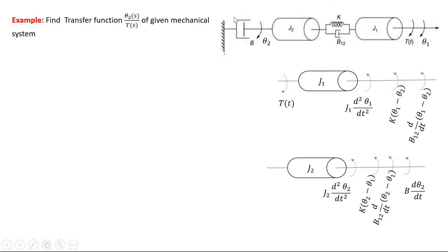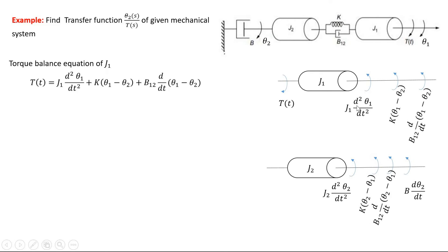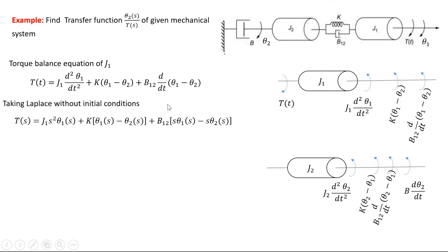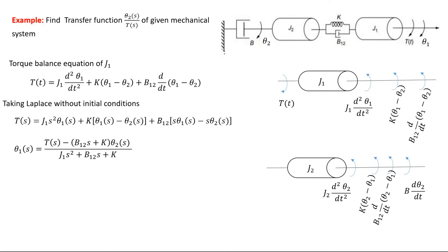Writing the torque balance equation for J1: T(t) = J1·d²θ1/dt² + K·(theta1 − theta2) + B12·d(theta1 − theta2)/dt. Taking the Laplace transform, T(S) = J1·S²·θ1(S) + K·(θ1(S) − θ2(S)) + B12·S·(θ1(S) − θ2(S)). This is designated as equation 1, from which we can express θ1(S).